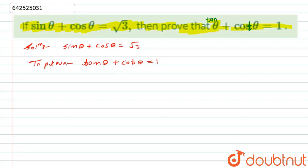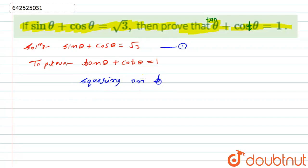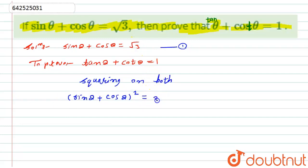Let this be equation number one. Now I will square both sides of equation number one. What I will get is: sine theta plus cos theta, that bracket squared, equals root three squared, which is nothing but three.